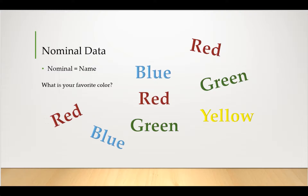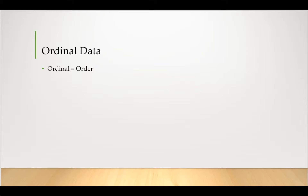And this is data, but we can't really do much with it. We can actually count how many people liked each color and try to determine a mode, but we can't really do any mathematical calculations on the data. We can't find an average, we can't find a standard deviation, we can't really apply those mathematical concepts to it. All we can really do is name the different categories.